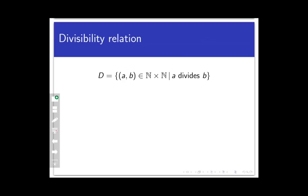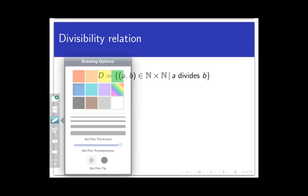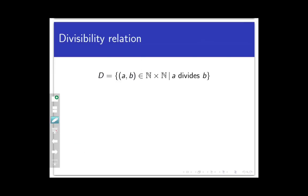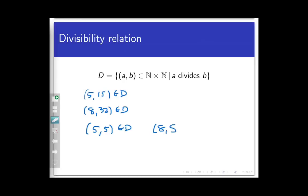To begin, let's look at an example similar to one we saw in an earlier video. Let D be the relation on the set of all natural numbers defined by: A,B is in D if and only if A divides B. This is a relation on the set of natural numbers because it's simply a collection of ordered pairs from N cross N. Any ordered pair where the first coordinate divides the second will work, like 5,15 or 8,32. Note that 5,5 is also in the relation because 5 divides itself, and 8,8 is in the relation because 8 divides itself. Since every natural number divides itself, the pair A,A is in that relation for every A in the natural numbers.